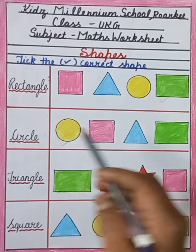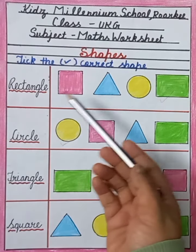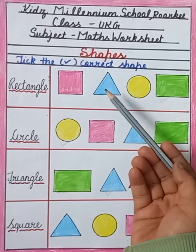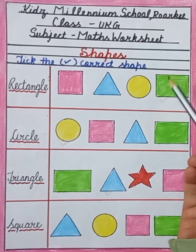Here are some shapes like square, triangle, circle, and rectangle.